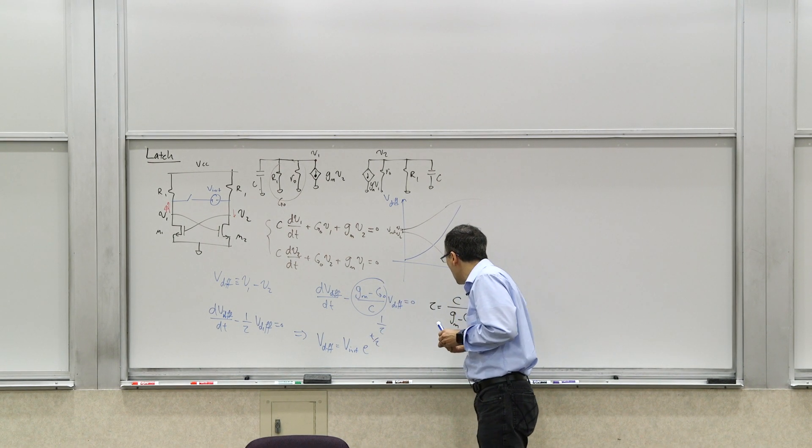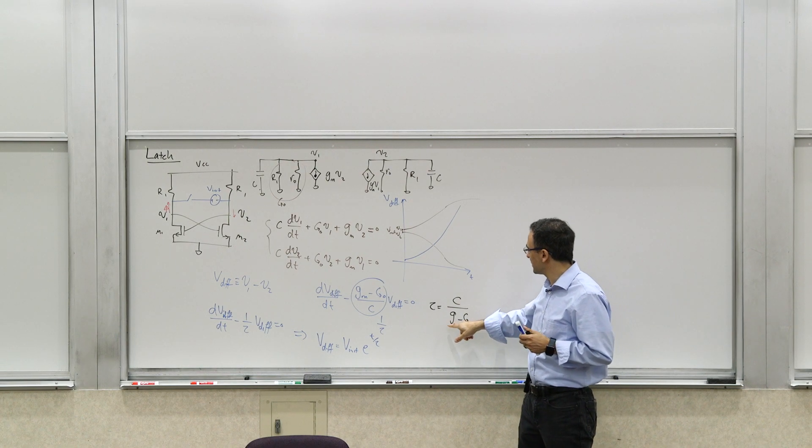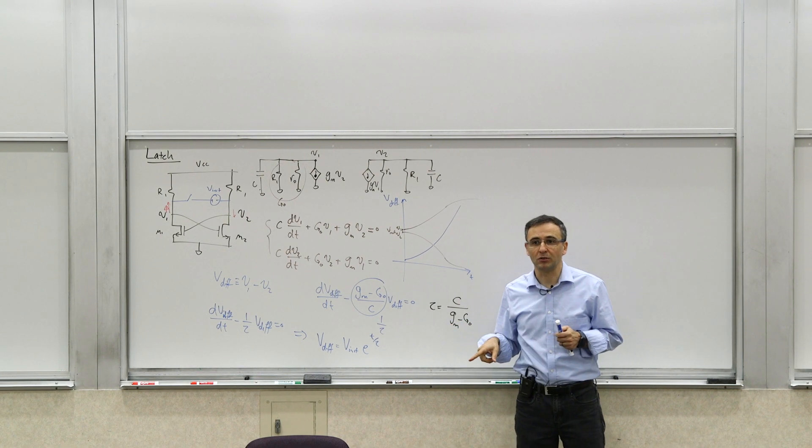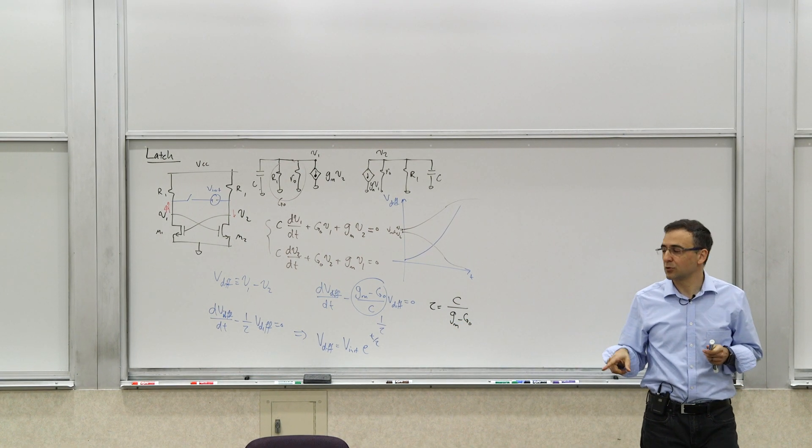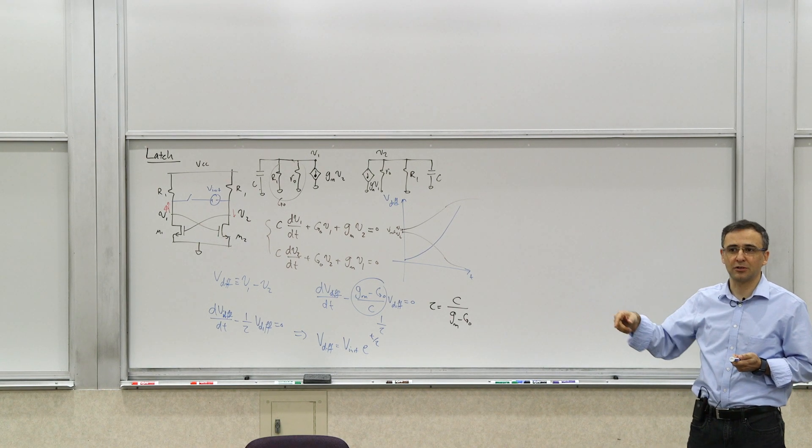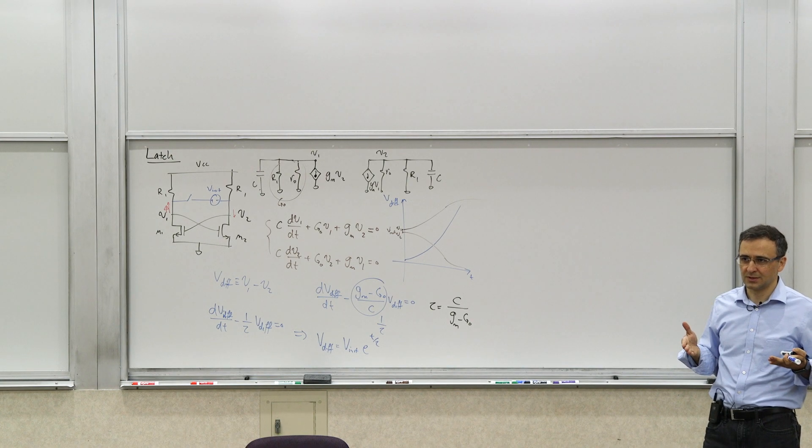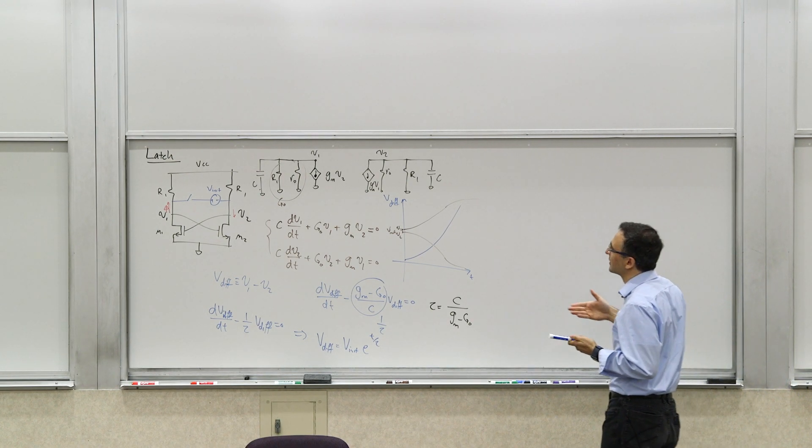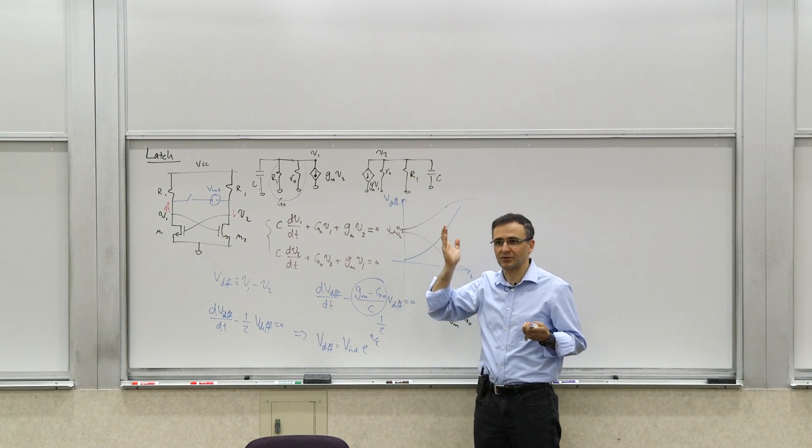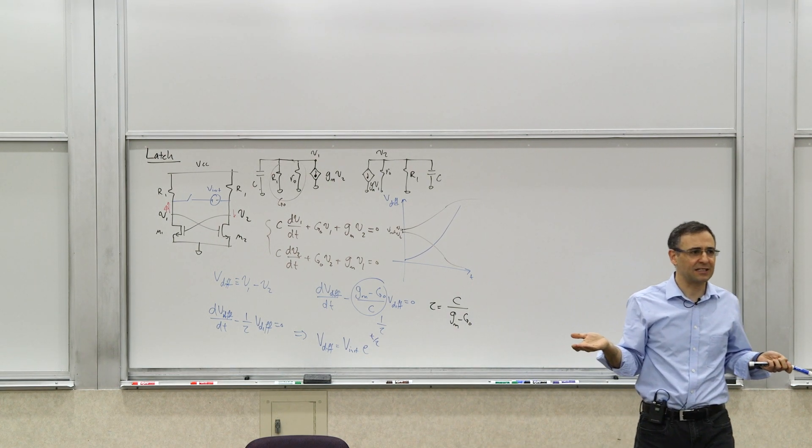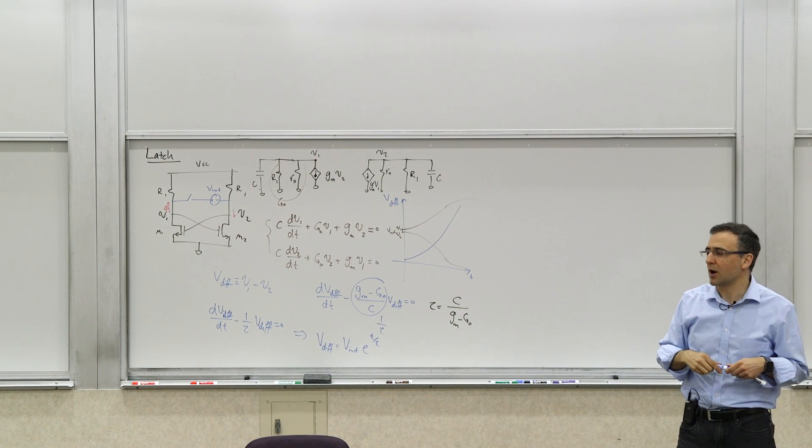Now, obviously, for this to work, GM has to be greater than G0. Otherwise, that coefficient becomes positive, so the exponential, it would be exponential decay. It would not operate as a latch. The transconductance has to be stronger than the resistances, the positive resistance. You're basically inducing a negative resistance. You've seen this before in problem sets.